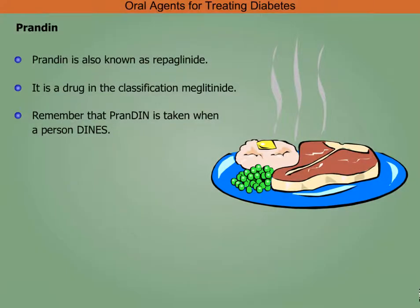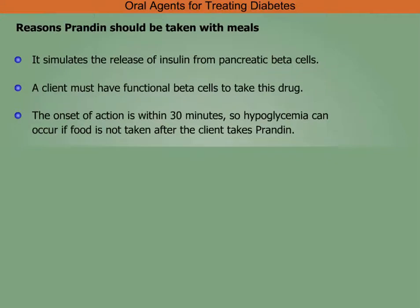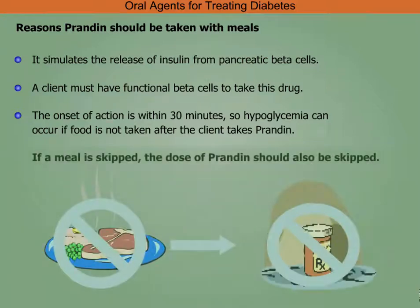Prandin, also known as repaglinide, is a drug in the meglitinide classification. Remember that Prandin is taken when a person dines. It stimulates the release of insulin from pancreatic beta cells, requiring functional beta cells. The onset of action is within 30 minutes, so hypoglycemia can occur if food is not taken. If a meal is skipped, the dose of Prandin should also be skipped.